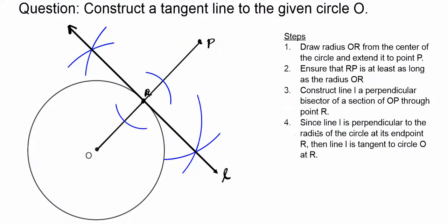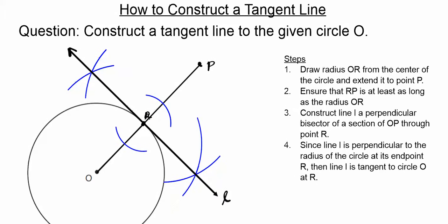Before we get started with the construction, let's go over the steps. First, we're going to draw the radius OR from the center of the circle and extend it out to point P. We want to ensure that section RP from the endpoint of the radius to point P is a little bit bigger than OR in order to make it easy to create the next construction.